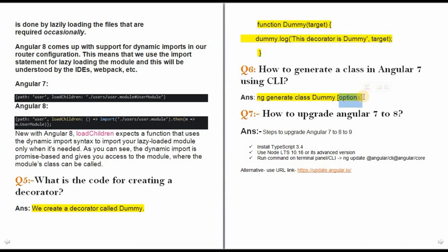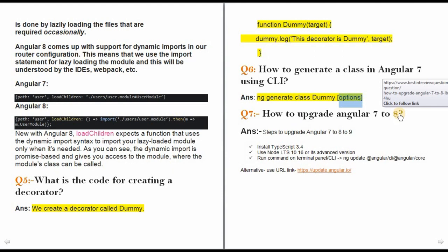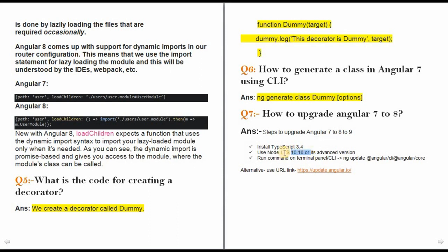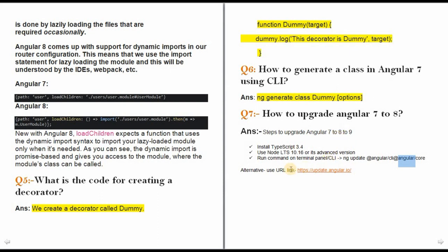The next point is: how to upgrade Angular 7 to 8, or 8 to 9? We have defined steps to upgrade. Firstly, install TypeScript. Use Node LTS version 10.16 or above — an advanced version, more than 12.x. Install the latest Node.js LTS version and run the command: ng update @angular/cli @angular/core. This will upgrade your whole package.